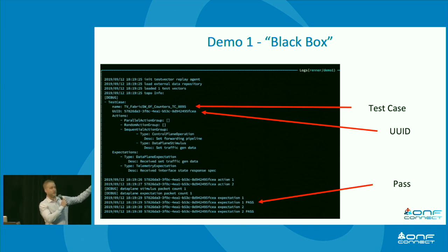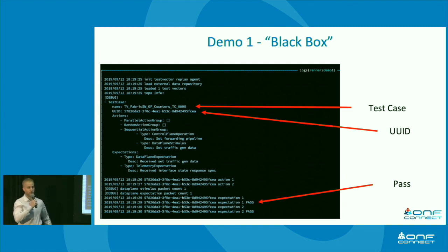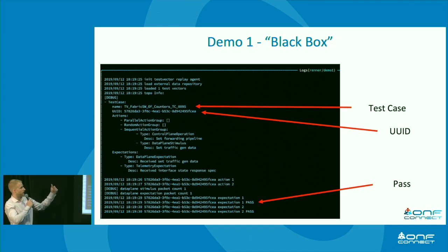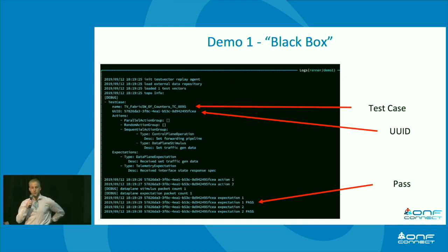During the development cycle, we added some debug statements to help formalize and share this with other team members. We don't have any parallel action groups or random action groups — we're using a sequential action group. We have some debug output because some of our P4 programs in development actually did not pass, so this was a tool for us, but hopefully it helps demonstrate the order of operations happening here.